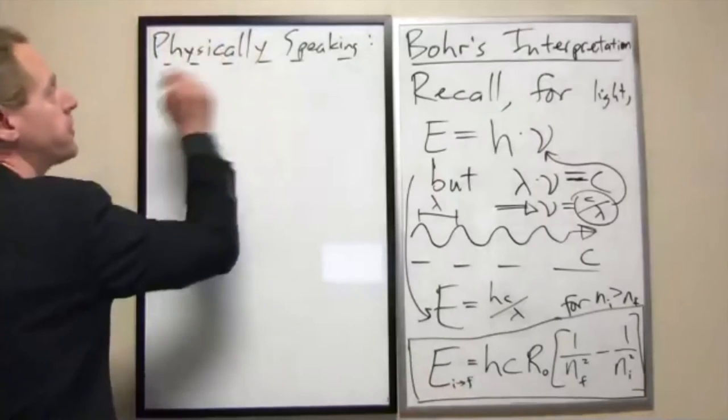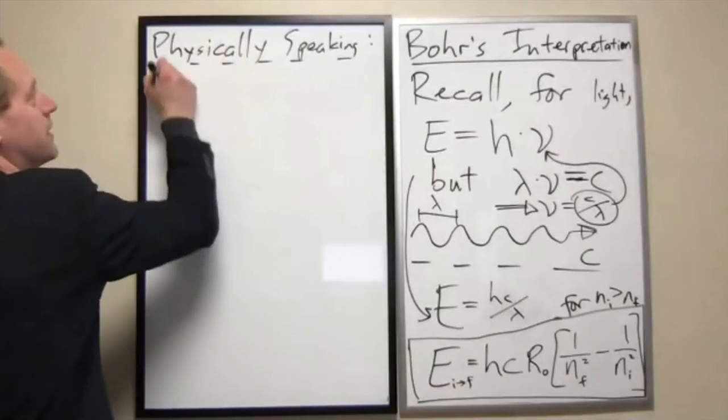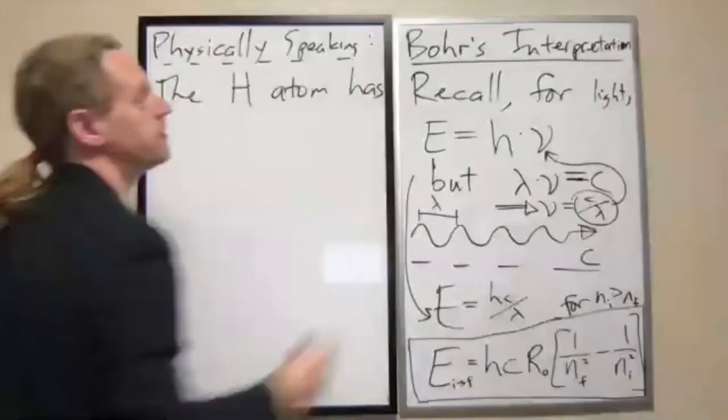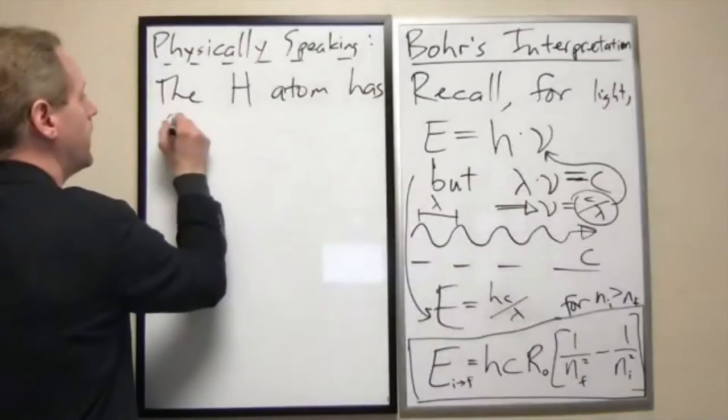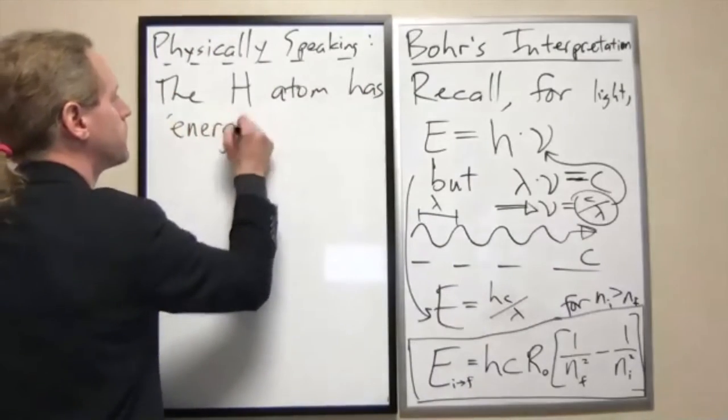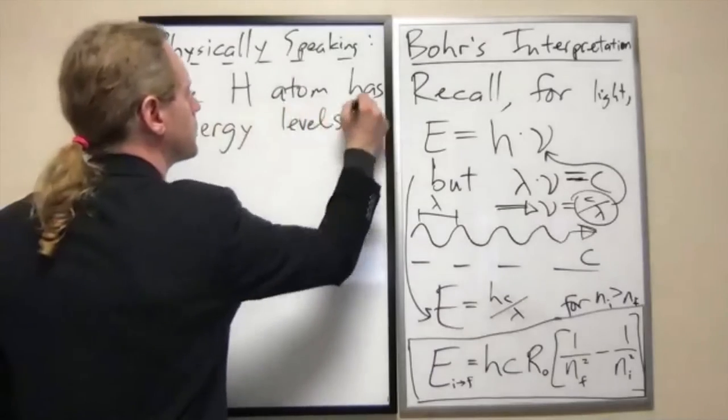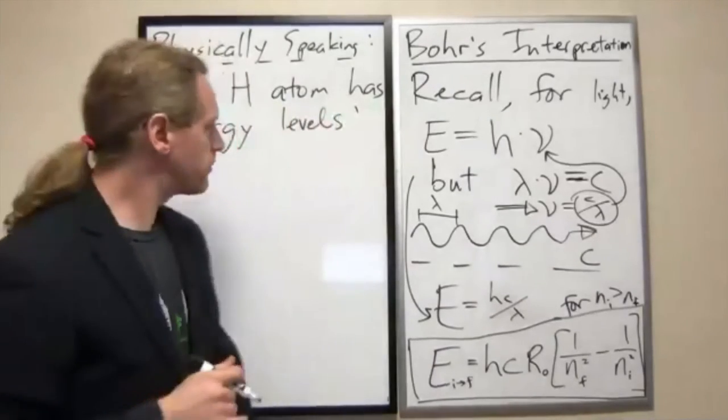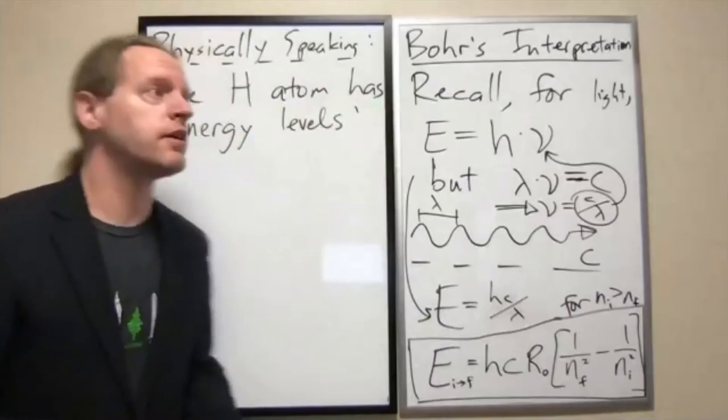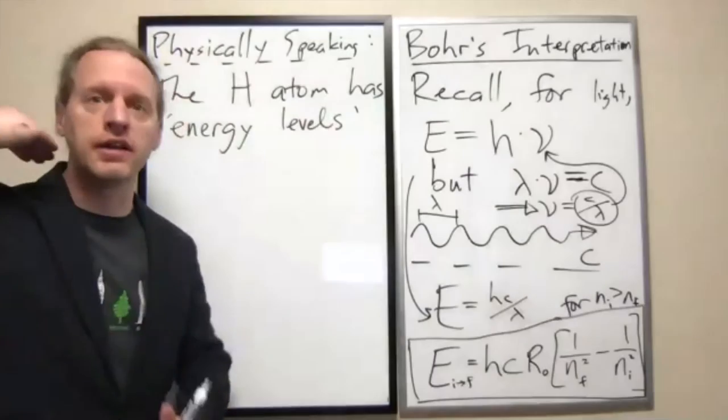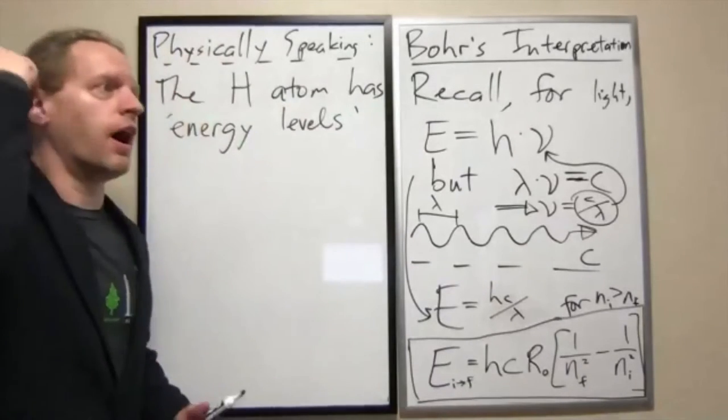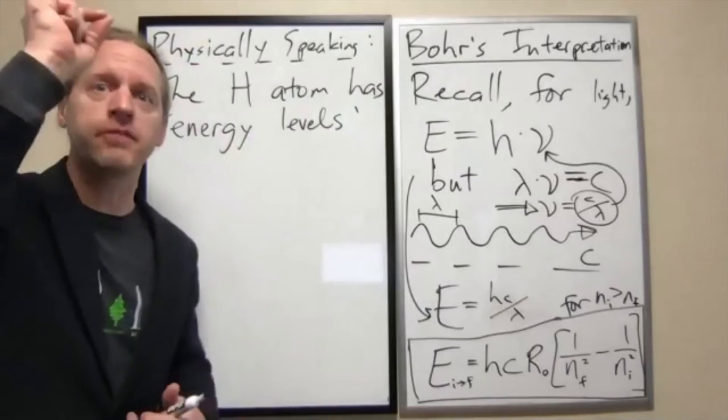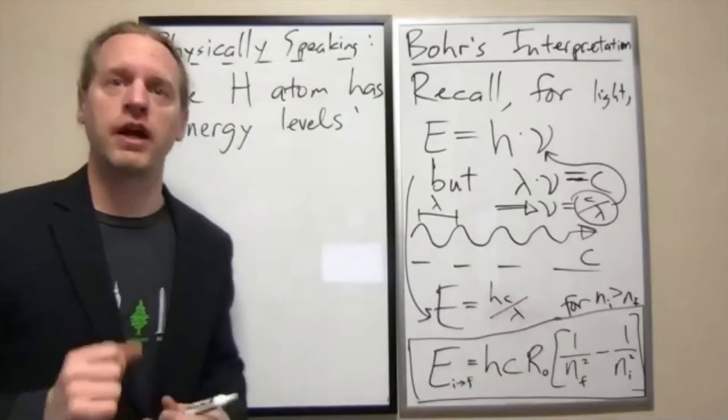Physically speaking, the hydrogen atom has what are known as energy levels that are mapped to the integers. What I mean is that you can list in series a whole bunch of different energies of the hydrogen atom and associate with each of those a specific integer greater than zero.